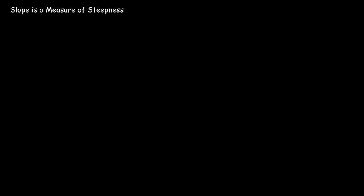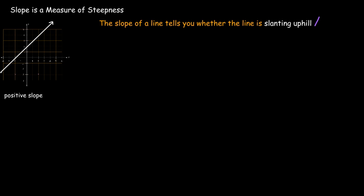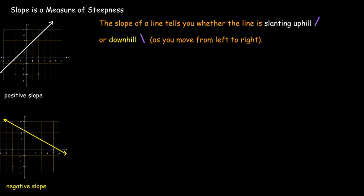Now the slope is a number and what it does is it measures how steep a line is. So first of all, it tells you, based on whether it's positive or negative, if the line is sloping uphill or slanting uphill as you go from left to right or if it's slanting downhill as you go from left to right. So a negative slope means it's going downhill from left to right. Positive means going uphill.